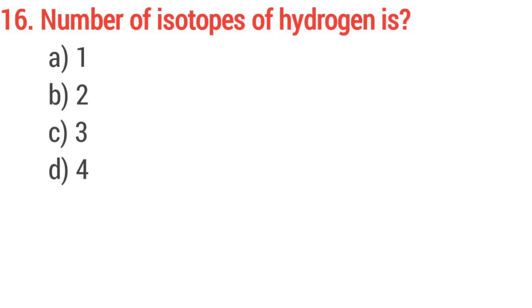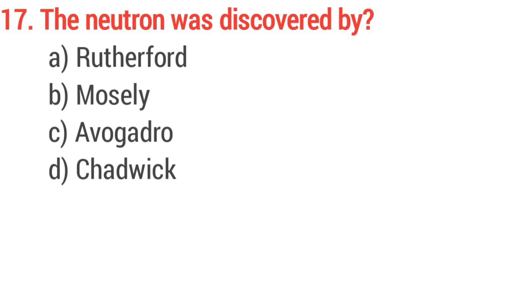Question number 16, the number of isotopes of hydrogen is? Question number 17, the neutron was discovered by? Answer option D, Chadwick.